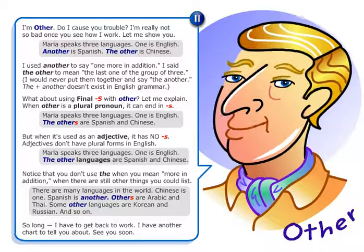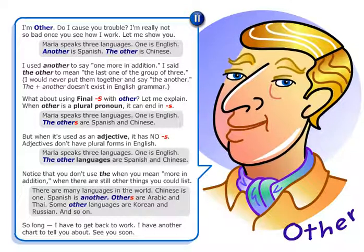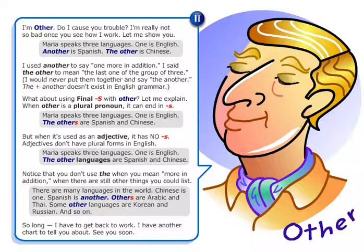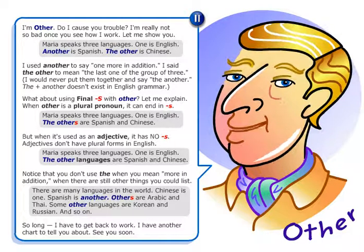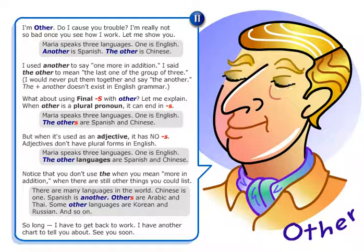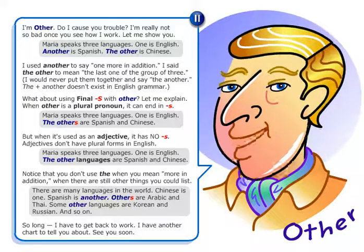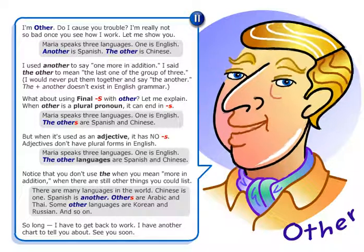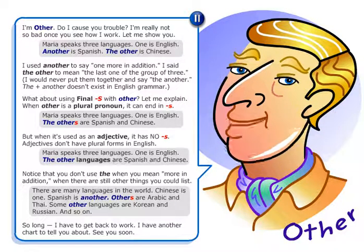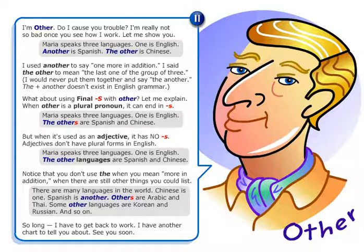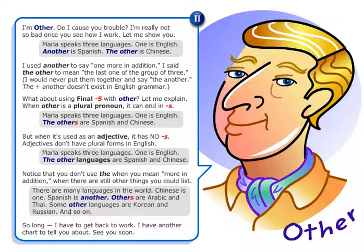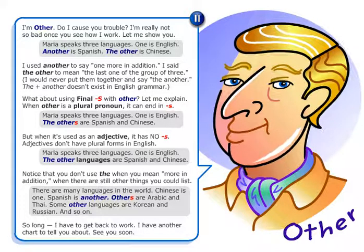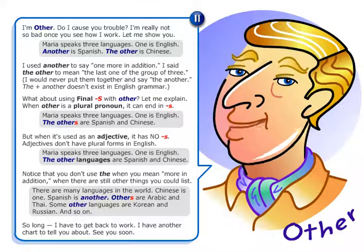What about using a final -s with 'other'? Let me explain. When 'other' is a plural pronoun, it can end in -s. For example: Maria speaks three languages. One is English, the others are Spanish and Chinese. But when it's used as an adjective, it has no -s.